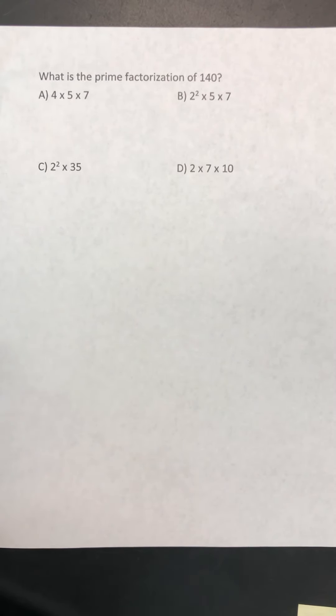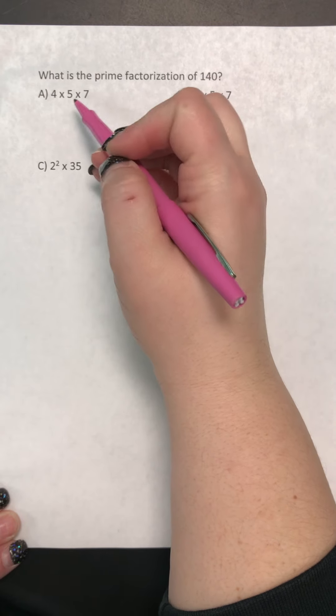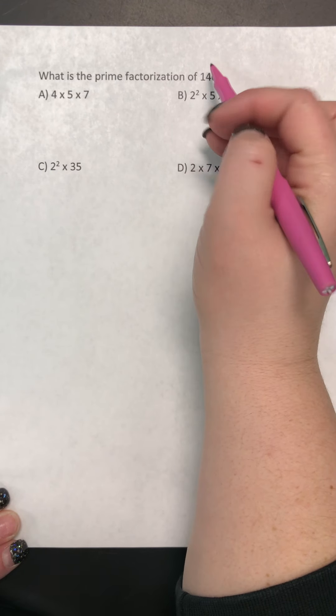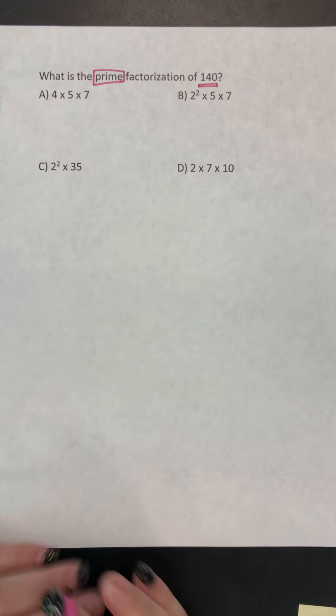So the question says, what is the prime factorization of 140? So basically they're saying which of these multiplies to equal 140 using only prime numbers.